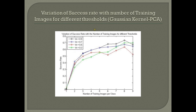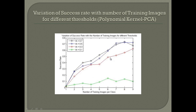This graph shows the variation of the success rate with the number of training sets for different thresholds in the case of Gaussian kernel PCA. Compared to the linear PCA results shown previously, the Gaussian kernel PCA shows that as the number of training sets is increased and as the threshold increases, the performance of the algorithm increases.